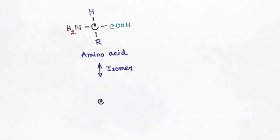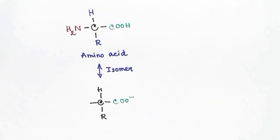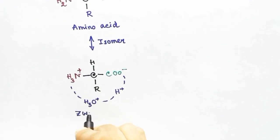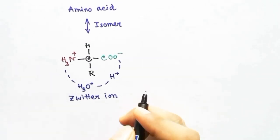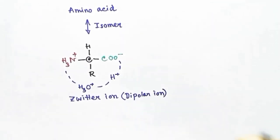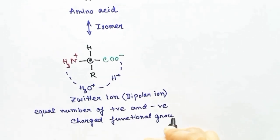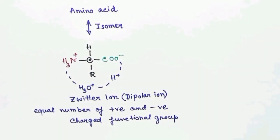In solution, the amino acid shows another isomer called the zwitter ion. That isomer contains COO⁻ and NH3⁺. When the COOH releases an H⁺ ion, that H⁺ reacts with water and is then given to the NH2, making it NH3⁺. This is called a zwitter ion or dipolar ion — it has negative and positive charges on two functional groups, but the net charge is zero.